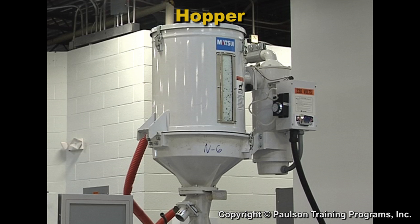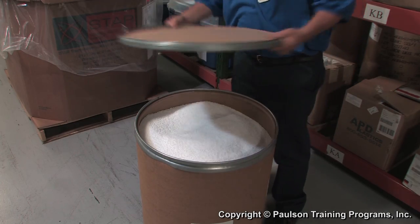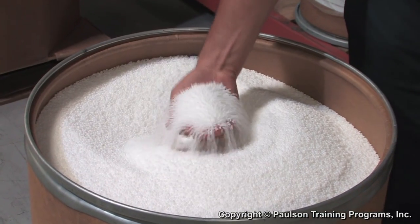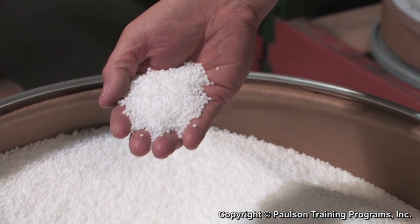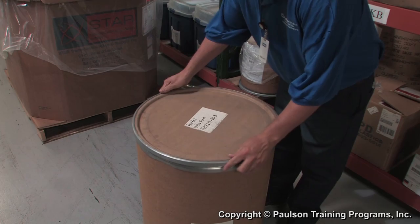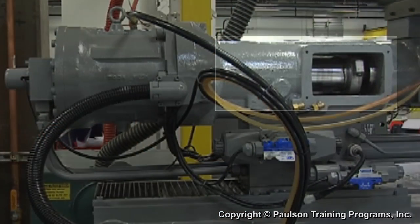Here is the hopper that holds the raw material. The plastic raw material is usually small round beads or cylindrical pellets. We'll use the terms pellets and granules to refer to all forms of plastic raw material.